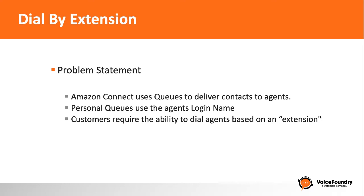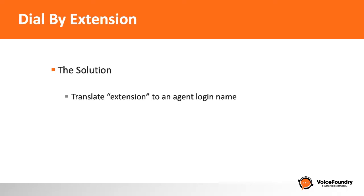In December Amazon released a feature called personal queues. This allowed us to route to agents directly to their personal queues. However Amazon Connect uses the agent ARN or the agent username to be able to send calls to users. What we really need is a way to use extensions that our existing customers are using today. For that we're going to use a translation solution — we'll ask the caller to enter the extension they require, and then behind the scenes translate that number into the agent username and dial the agent's personal queue.